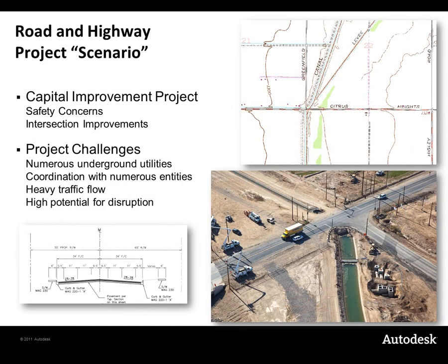Here's an example of a typical capital improvement project that all communities can relate to. We have a dangerous intersection where more than 30 accidents have occurred in the past three years, and eight of these accidents have produced serious injuries. Now at face value, it seems like a fairly straightforward project — making an intersection safer. We identify the cause of the problem and then resolve it. Unfortunately, it is not that simple. In this intersection, we have a number of existing utilities including telephone, gas, electric, and sanitary sewer.